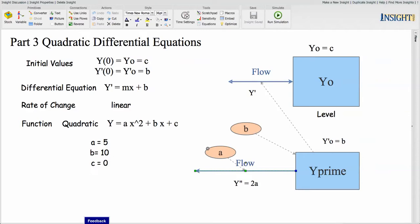Now the sign of a could be plus or minus, and that would change the way that the graph shows. So y double prime equals 2a. So the equation in the flow is 2 times a. 2 times a changes the value of y prime. The value of y prime initial value is b. And then the value of y prime becomes the value of the flow that changes the value of y.